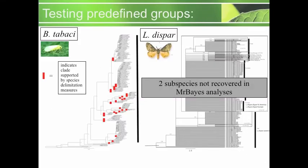On the left are the results for Bemisia tabaci; on the right are the results for Lymantia dispar. For Bemisia tabaci, the 24 predefined groups were all supported with our species delimitation measures. Whereas for Lymantia dispar the resulting phylogeny was unresolved and we were unable to test the two subspecies.